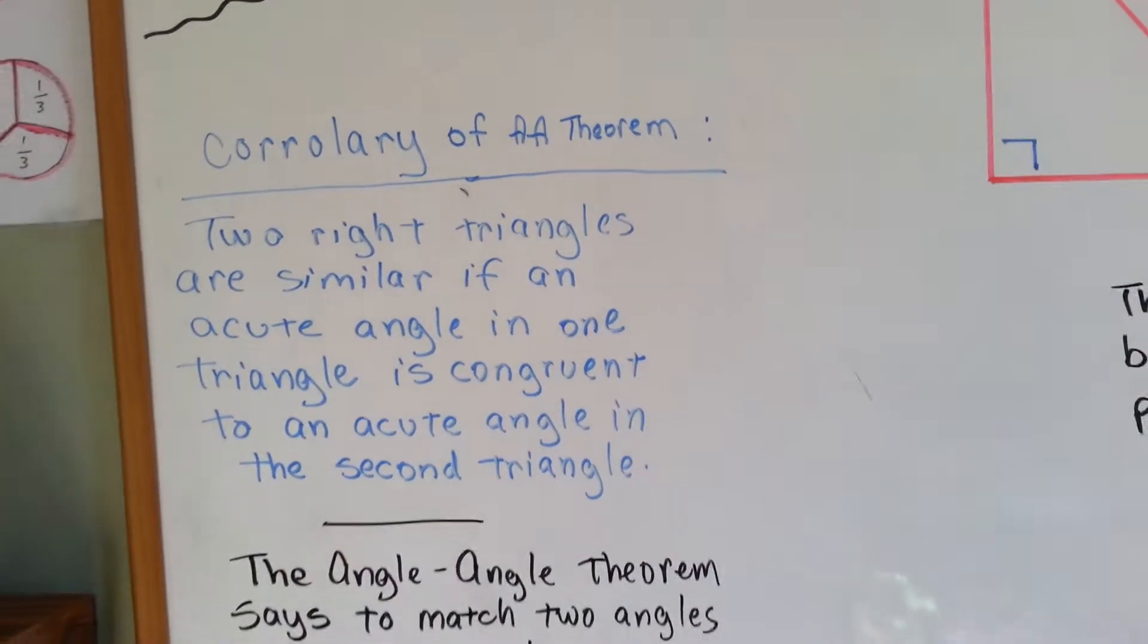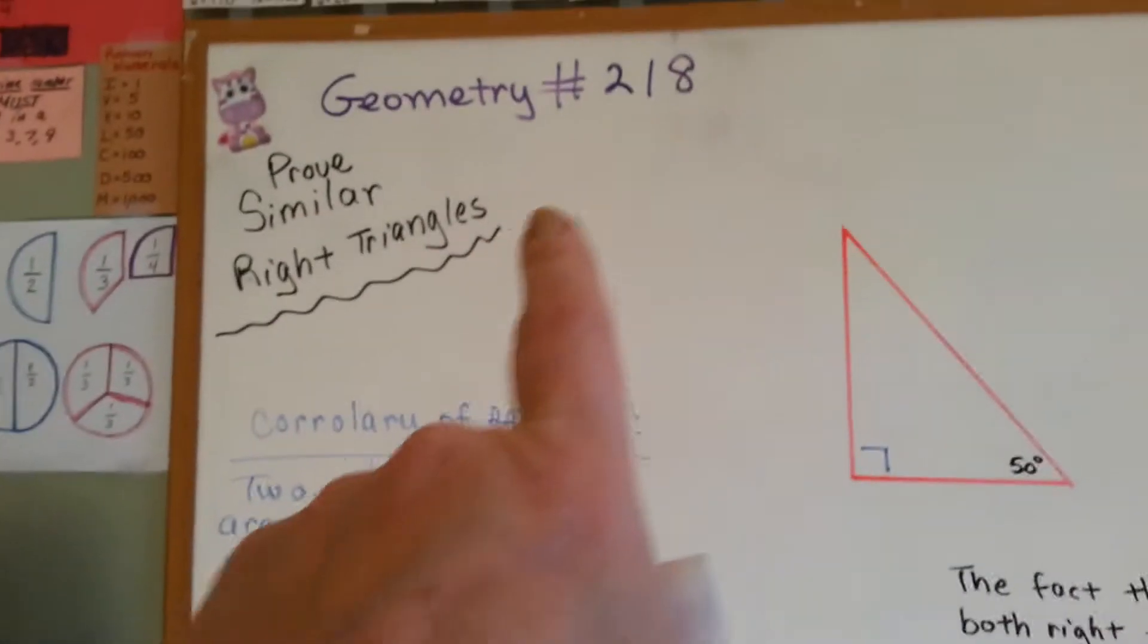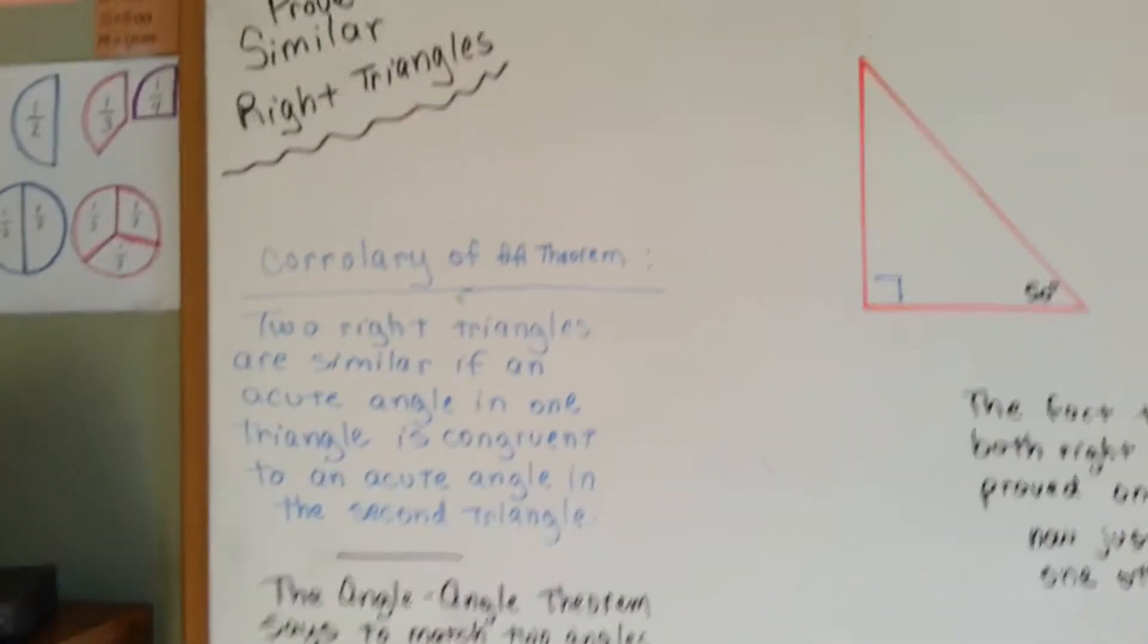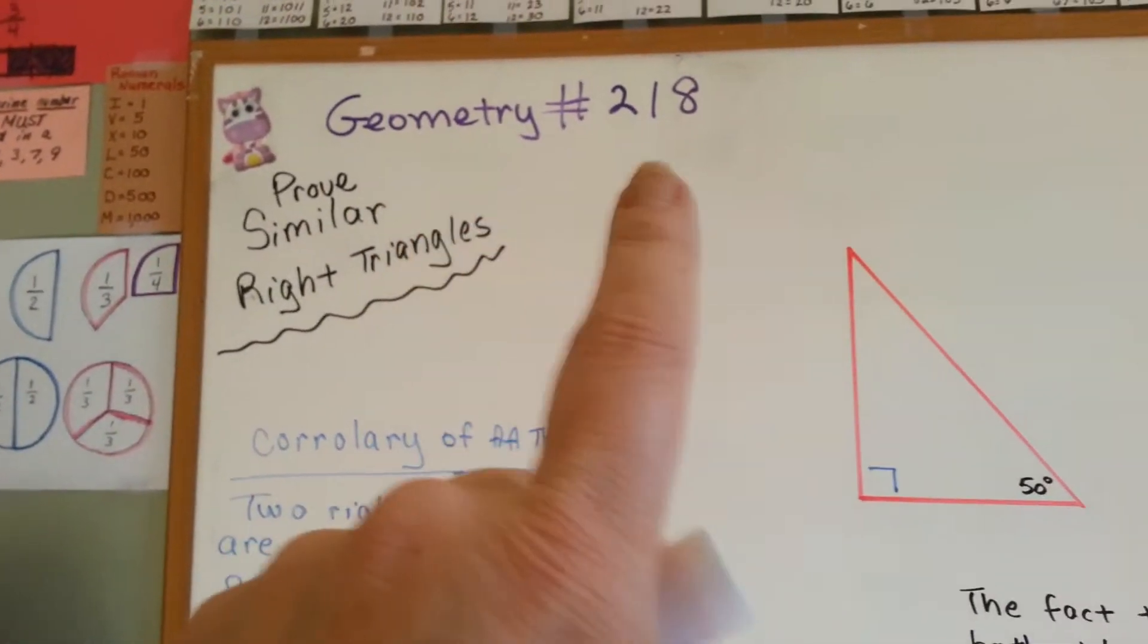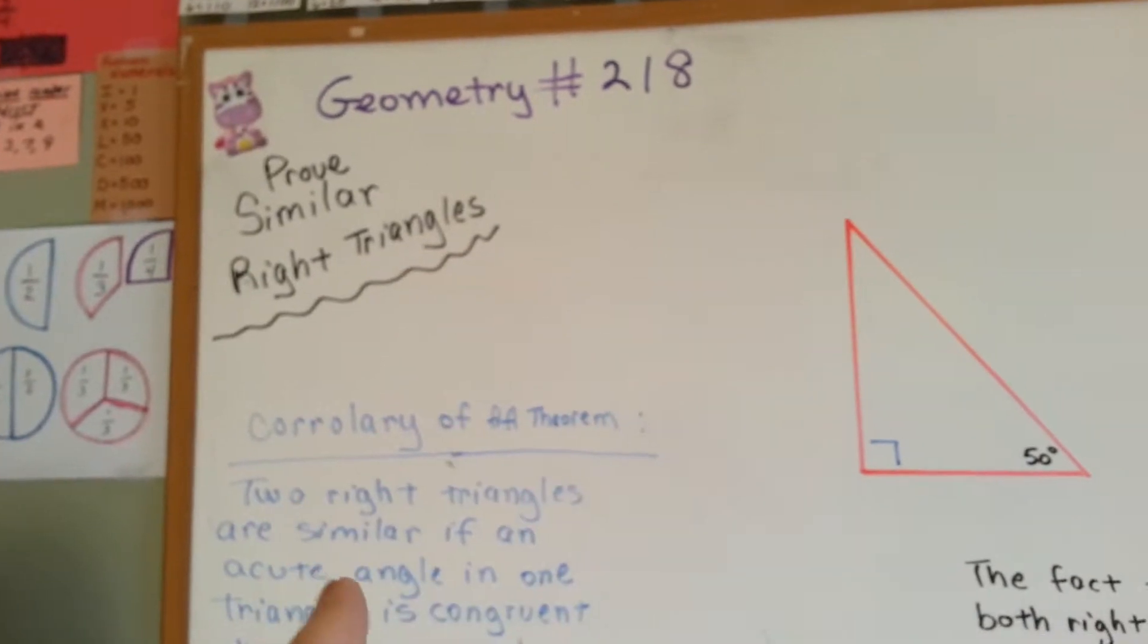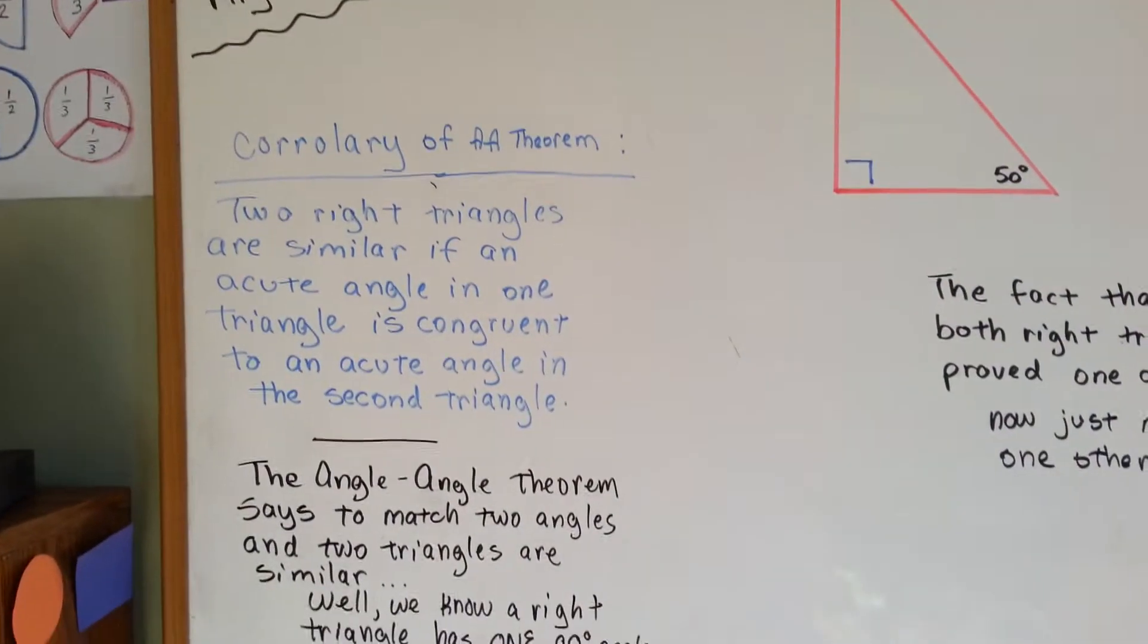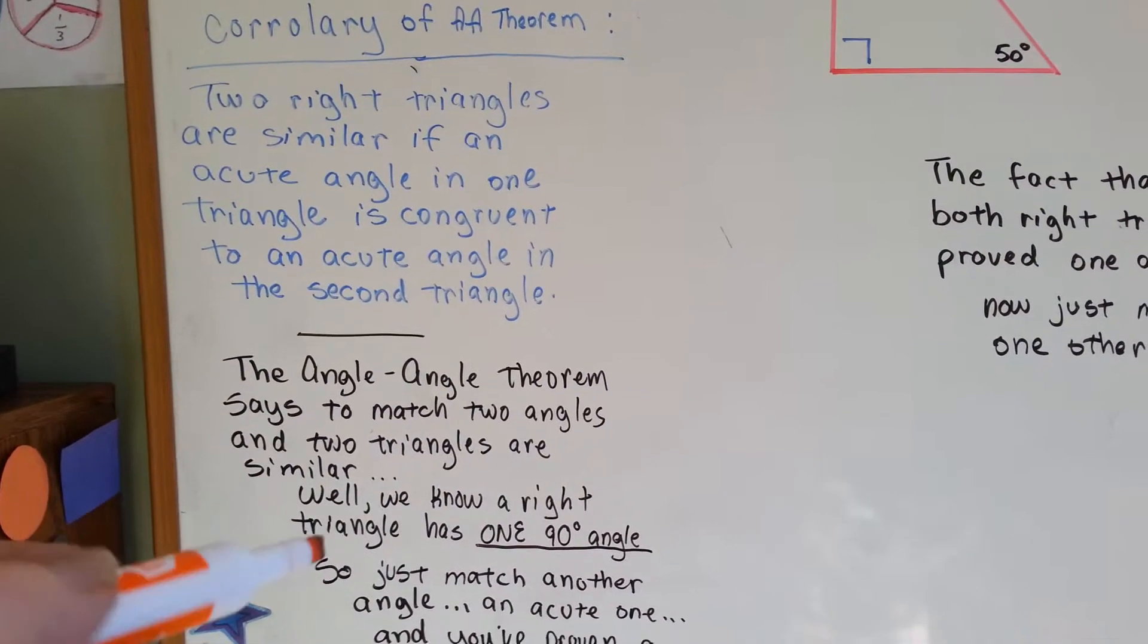So if you remember, the AA theorem is the angle-angle theorem. We just did it in the previous video, 217, so if you have no clue what I'm talking about, I would advise you to type in geometry 217, Joanne's School, see if you can find it, and it will explain this, but you may not have to if you pay attention here.